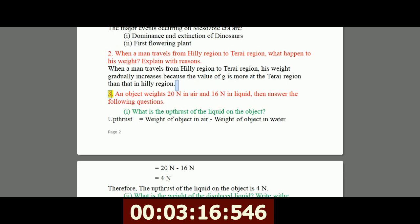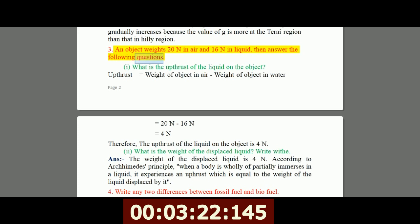3. An object weighs 20N in air and 16N in liquid, then answer the following questions. I, what is the upthrust of the liquid on the object? Upthrust equals weight of object in air minus weight of object in water equals 20N minus 16N equals 4N. Therefore, the upthrust of the liquid on the object is 4N. II, what is the weight of the displaced liquid? The weight of the displaced liquid is 4N. According to Archimedes principle, when a body is wholly or partially immersed in a liquid, it experiences an upthrust which is equal to the weight of the liquid displaced by it.